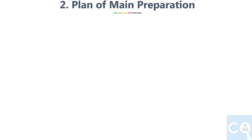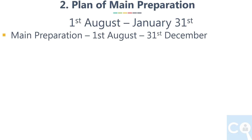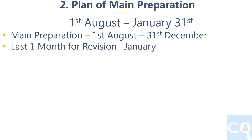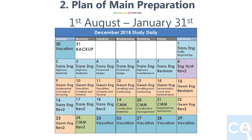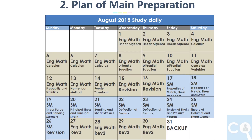Now let's jump to the second point: the plan of main preparation. We will start the preparation plan from August 1st to January 31st. The first 5 months are for main preparation, up to December 31st, and the last month, January, is for revision. One week in the main preparation time is kept as backup for planned vacations — I am keeping it at the end of December, but you can shift this based on your vacation timing. Based on the distribution of marks and topic weightage, the number of days for each topic and subject are divided in this plan. You can see the plan for each month with the last day as a backup date.